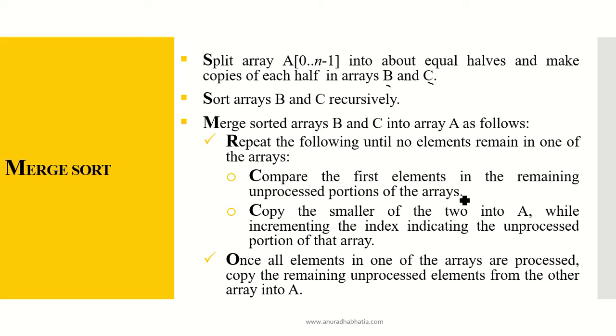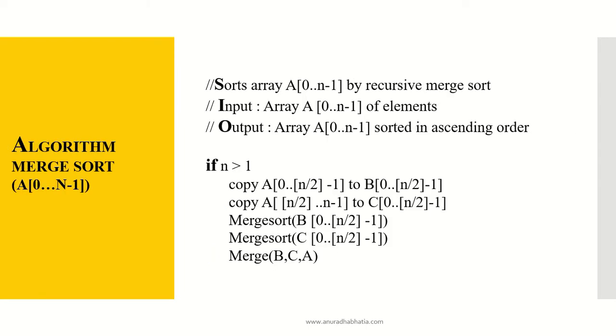Repeat the following until no elements remain in one of the arrays. Compare the first element in the remaining unprocessed portion of the arrays. Copy the smaller of the two into A while incrementing the index indicating the unprocessed portion of the array. Once all elements in one of the arrays are processed, copy the remaining unprocessed elements from the other array into A. This is what I showed in the example on the previous slide.